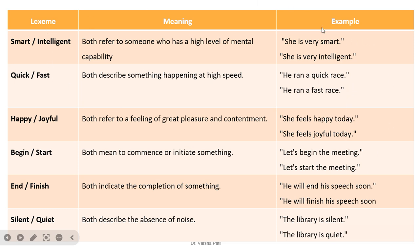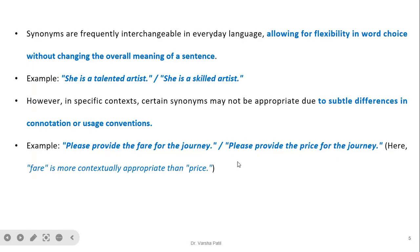Synonyms are frequently interchangeable in everyday language, allowing for flexibility in word choice without changing the overall meaning of a sentence. For example, 'she is a talented artist' or 'she is a skilled artist.' However, in specific contexts, certain synonyms may not be appropriate due to subtle differences in connotation or usage convention. For example, 'please provide the fare for the journey' is correct, but 'please provide the price for the journey' is not, even though 'fare' and 'price' are synonyms.